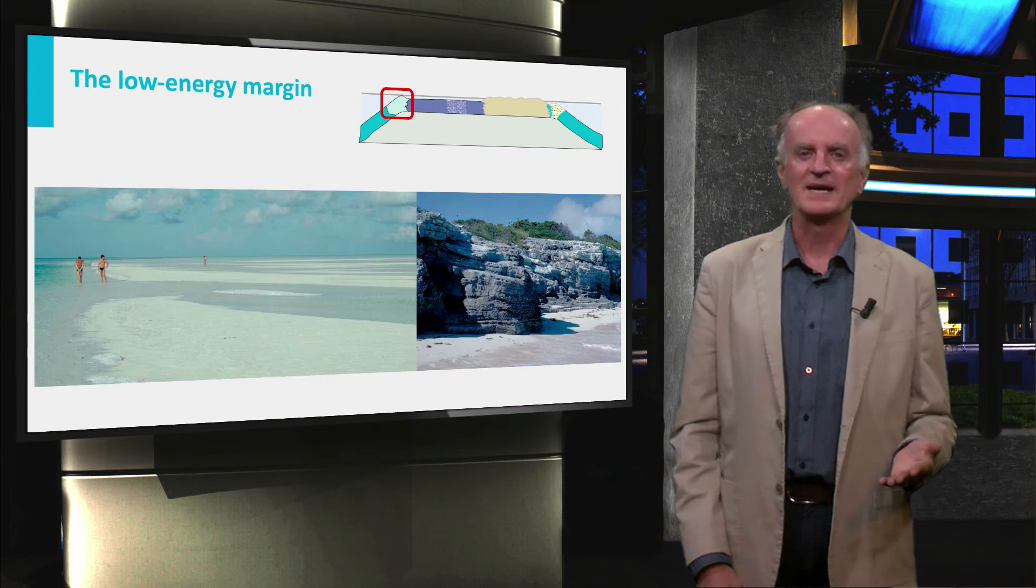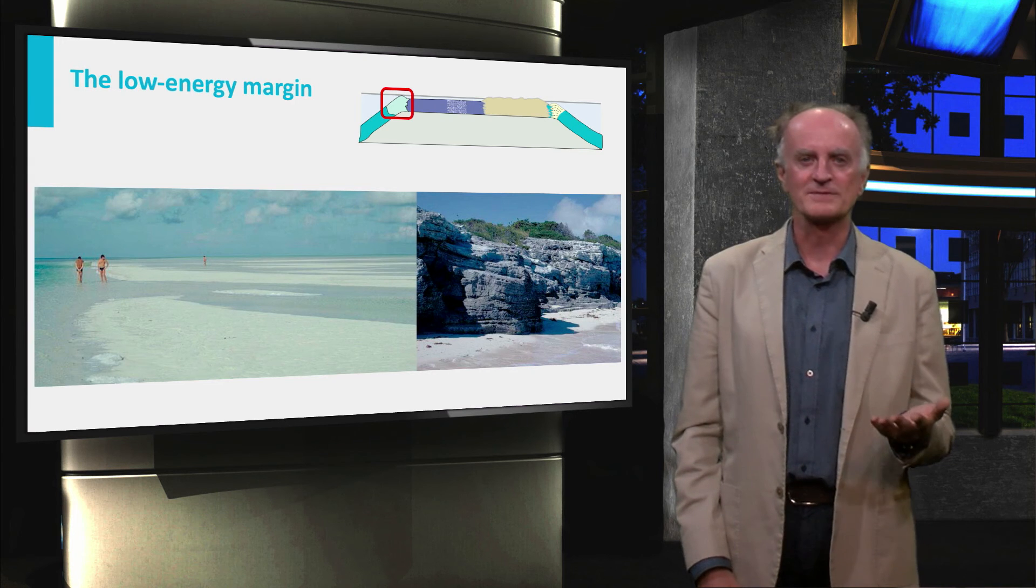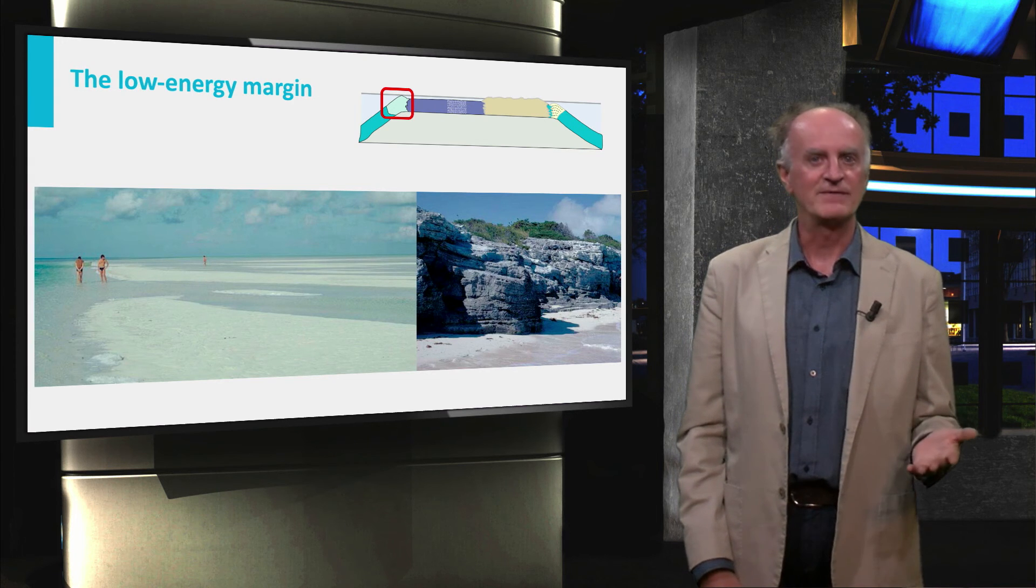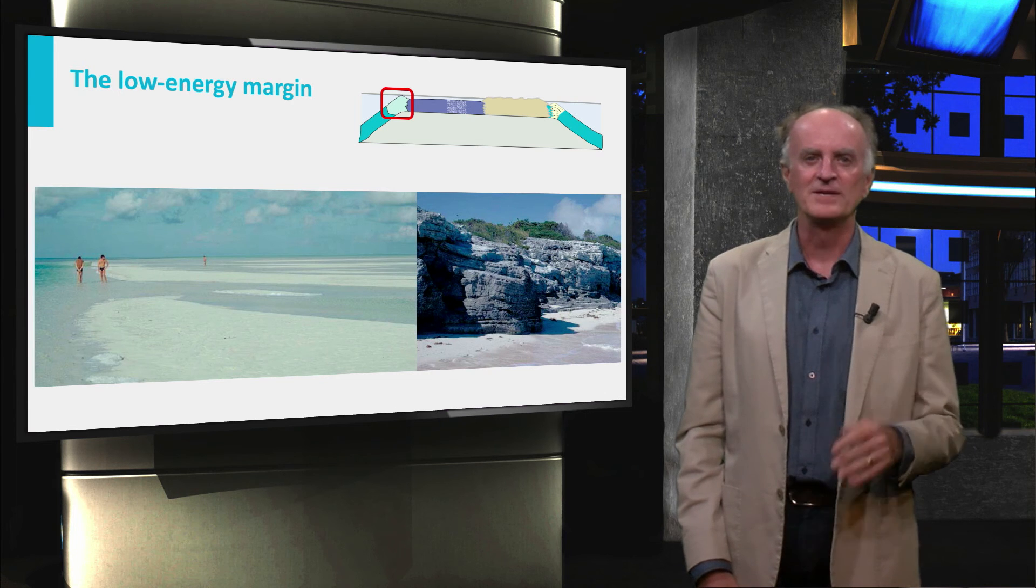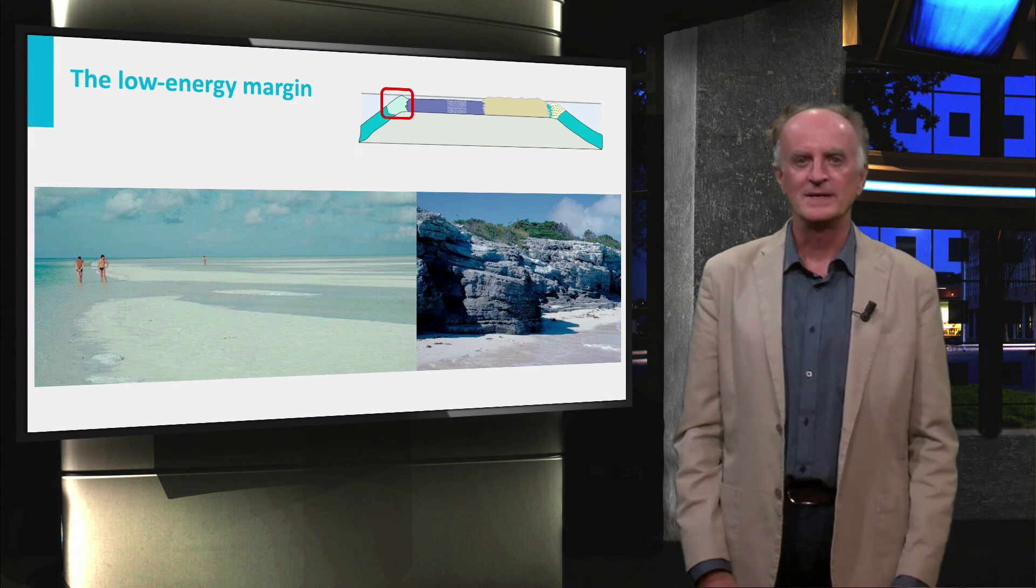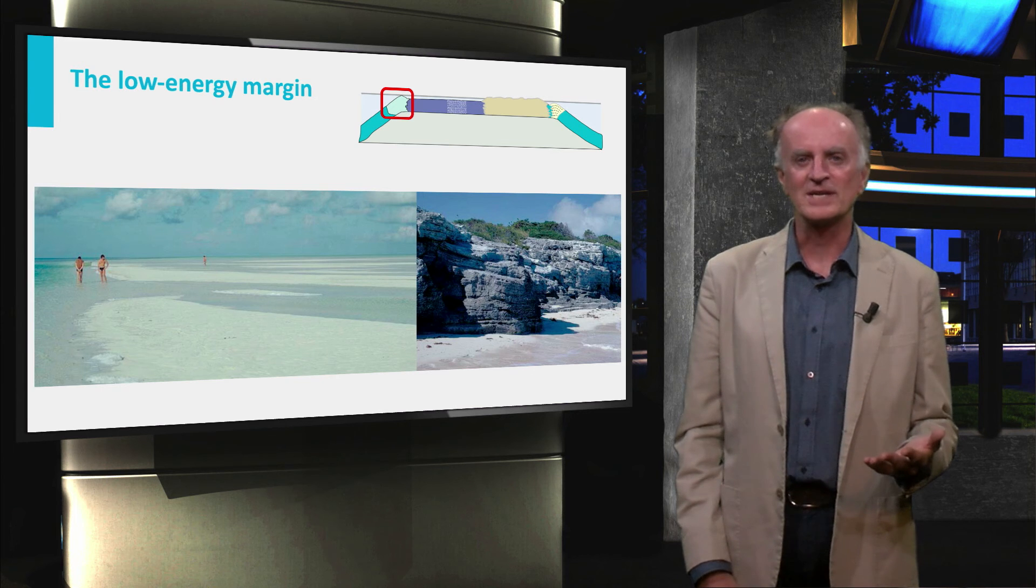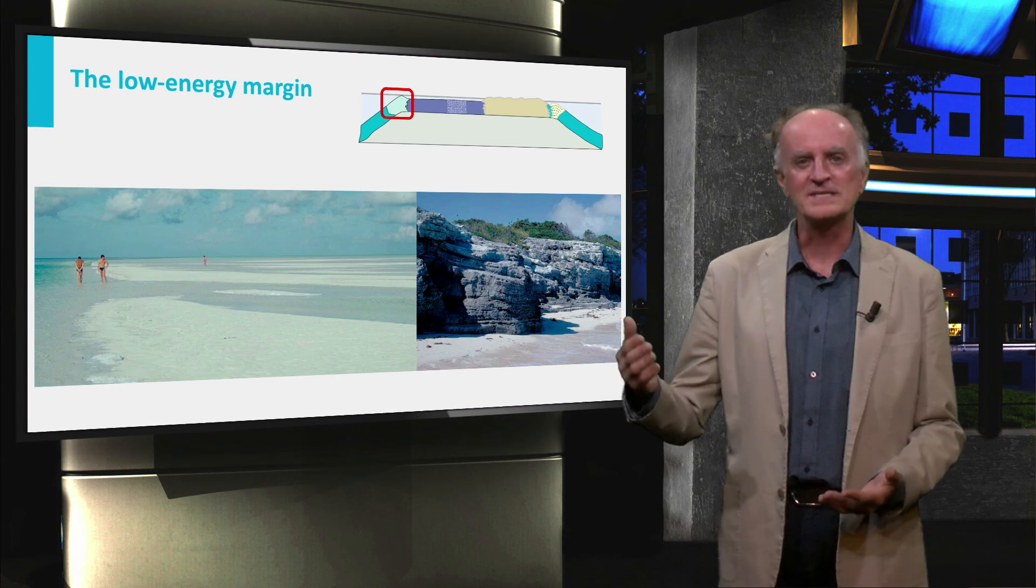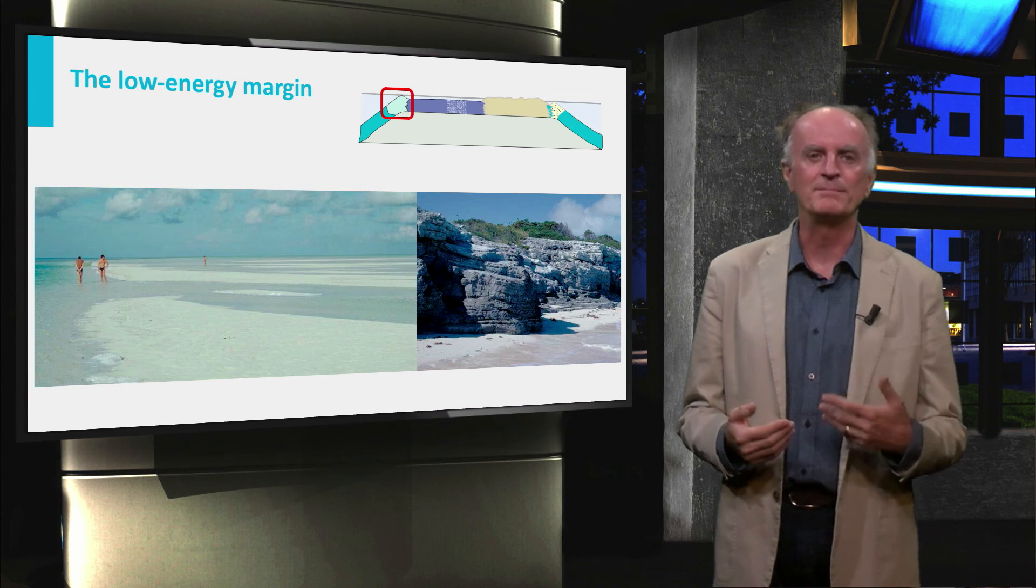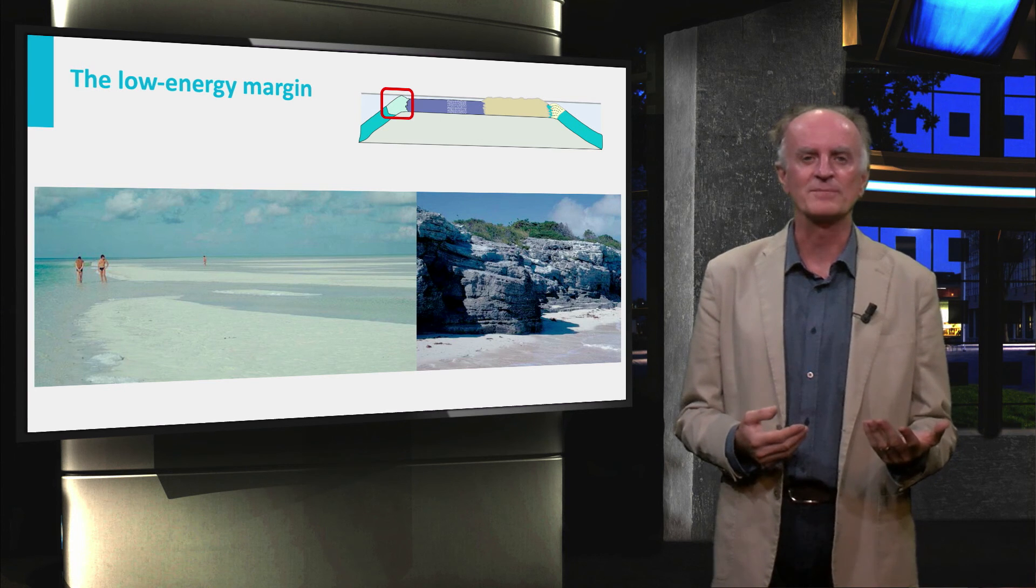The western margin on the Bahamas platform is essentially composed of sands. Sands have an angle of repose of 20-30 degrees and are thereby strong enough to protect the shelf platform interior. It is clearly a rim much less strong than the eastern one. But as we have seen, the western margin does not have to support the big storms which hit the region from the east.